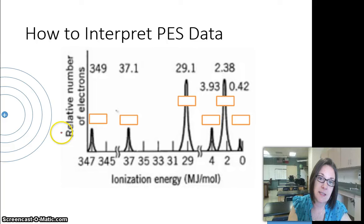If you look at the y-axis, it says this is the relative number of electrons that require this much energy to be removed. So if you look at the height of the peaks, it'll tell you how many electrons needed this much energy to be removed.